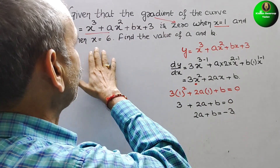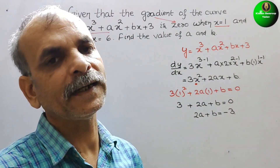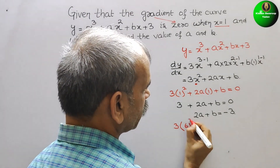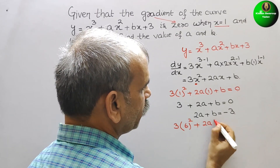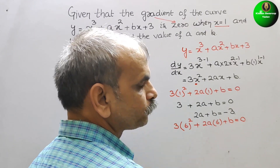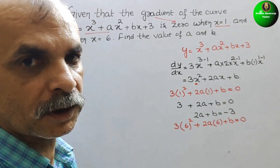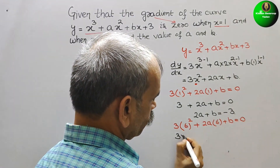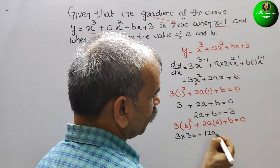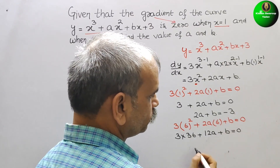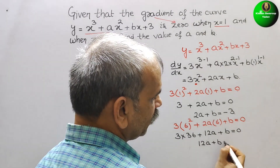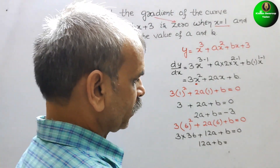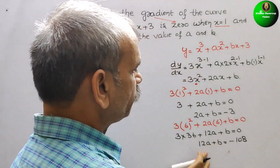Next, when x equals 6, again we get the gradient as 0. So substituting: 3 times 6 squared plus 2a times 6 plus b equals 0. Solving this: 6 squared is 36, and 36 times 3 is 108. So 12a plus b equals minus 108. So here we got another equation.